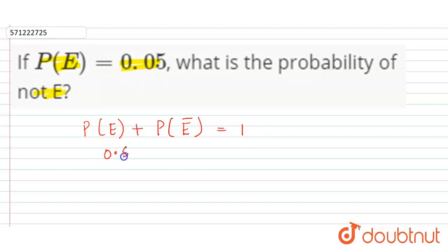So we have given P(E) as 0.05 and we have to find P(not E). So P(not E) will equal 1 minus 0.05, which is equal to 1 minus 0.05 is 5, right?